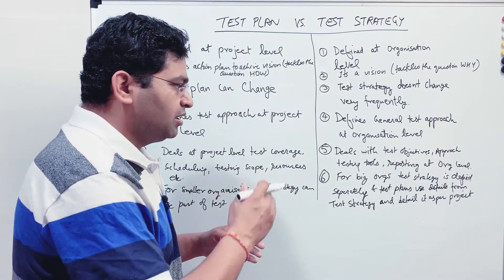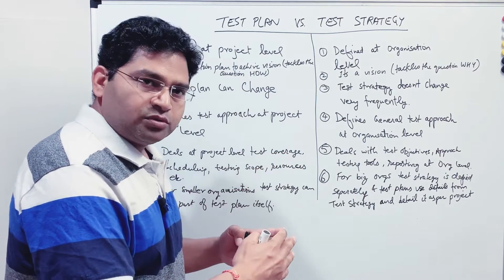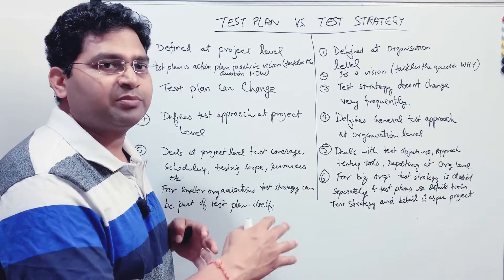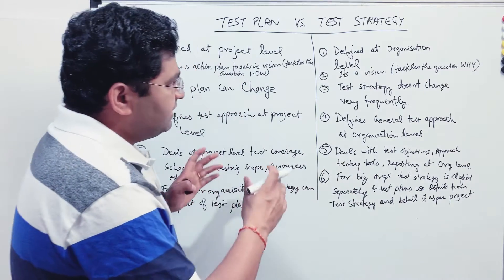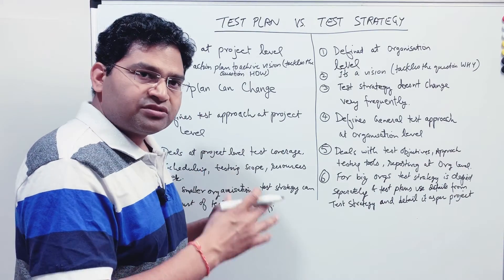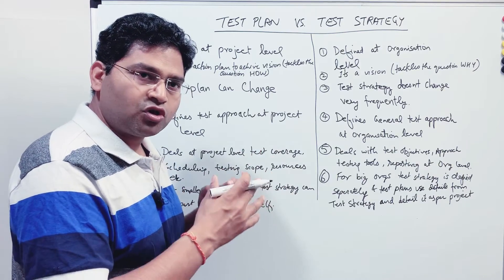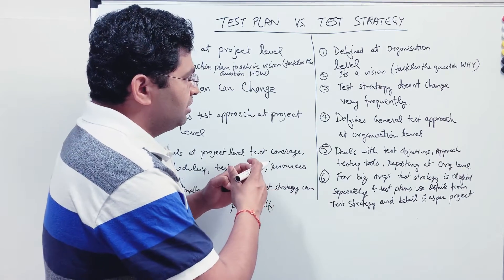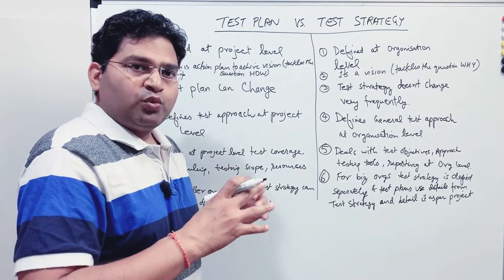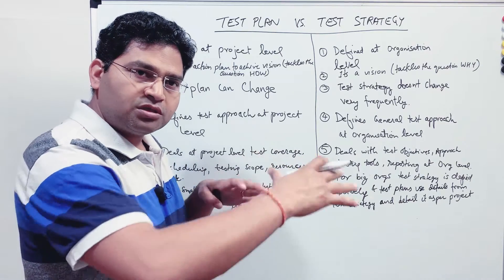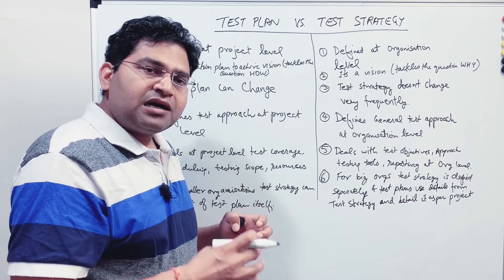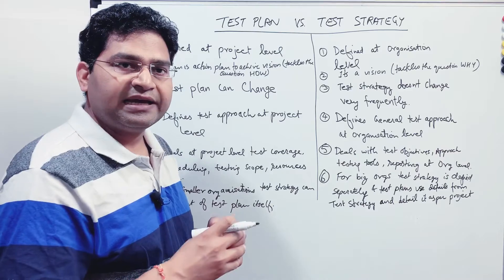In large organizations, there is a common test strategy, and projects within that organization take information from it and elaborate it into the test plan. Both documents are important if the organization wants to define them separately, because the test strategy will be a common document across all projects — and when a project starts writing a test plan, they refer to the test strategy to get that foundation.